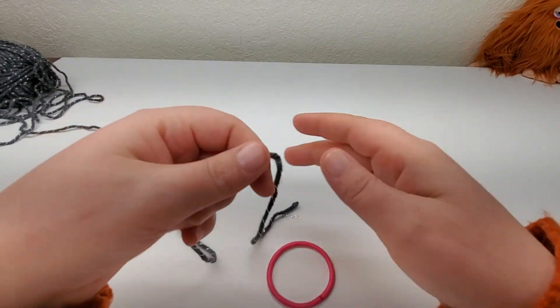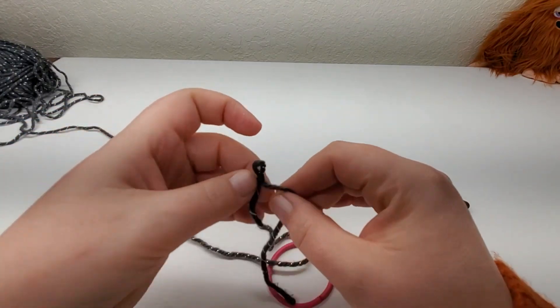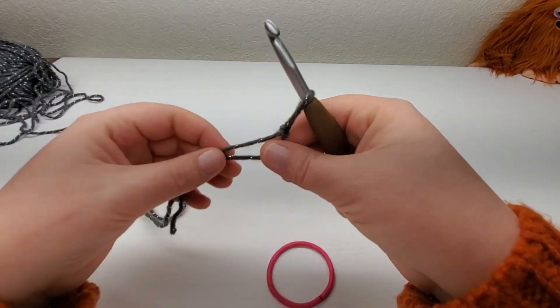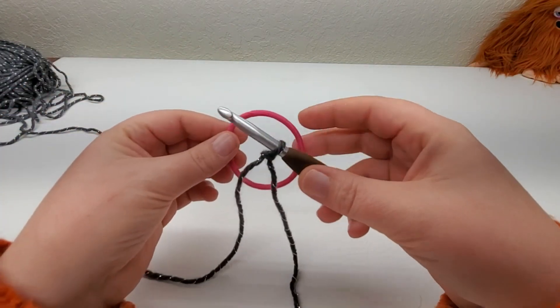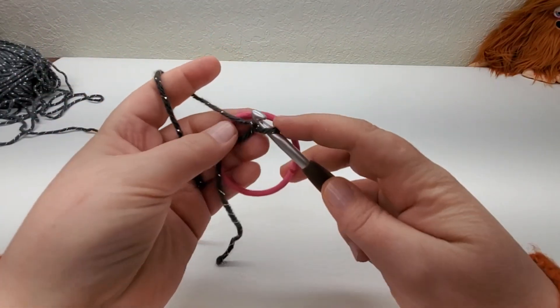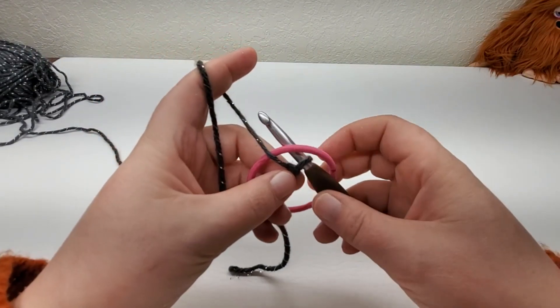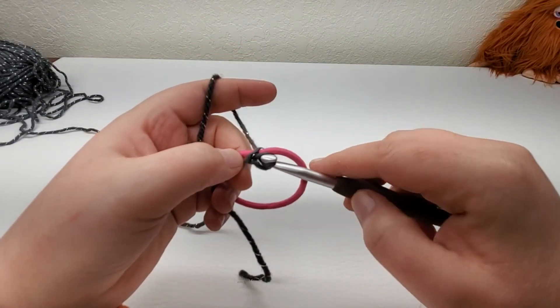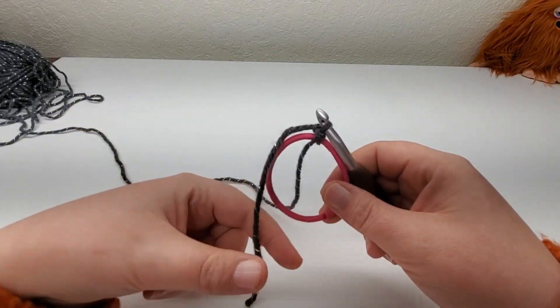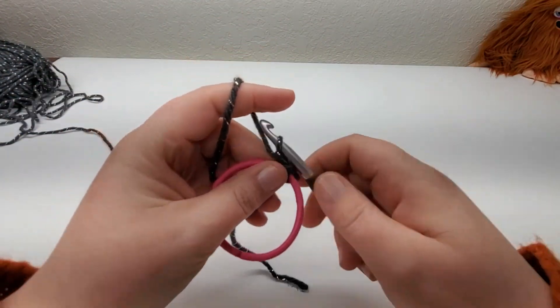So we're going to start with a slip knot, make sure you have enough tail to weave in. Put it on your hook. So we're going to take our hair tie, and we're just going to set all that right on top of the hair tie. Grab your working yarn. I'm going to hold my slip knot, and I'm just going to go right through the hair tie, grab my loop, pull it through, and it goes right through that slip knot. And I'm just going to flip my tail to the back, and chain one.